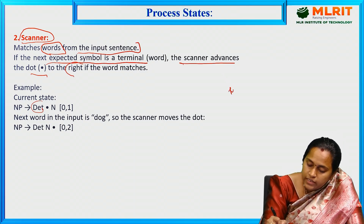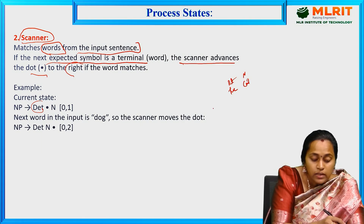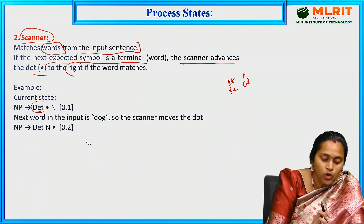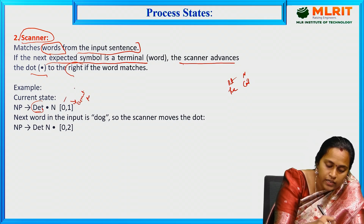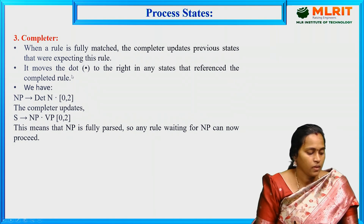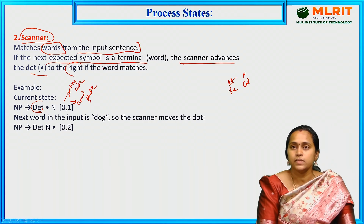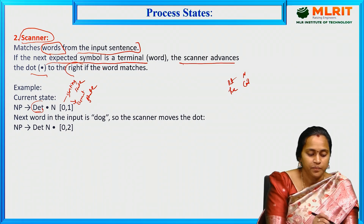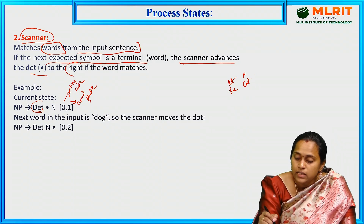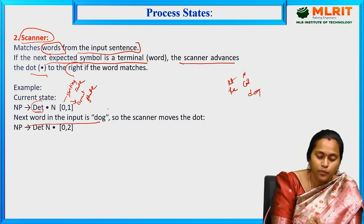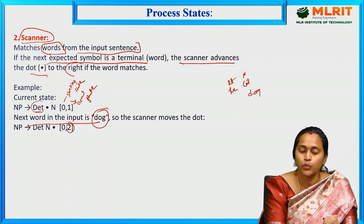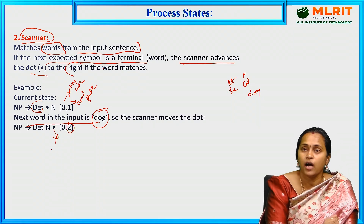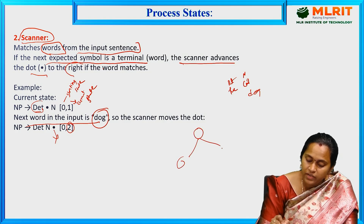For example, noun phrase contains determiner and noun. Suppose the input is 'the cat' - 'the' is the determiner and 'cat' is the noun. The zeroth position is the first starting position and one is the current position. J defines the current state. So the Scanner matches the word. The next word input, suppose 'the dog' - the scanner moves to the next word. The determiner/noun dot will increment to position two. The dot always moves to the right.